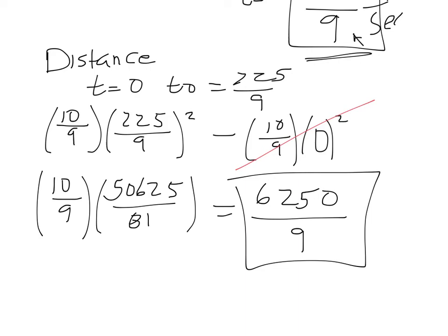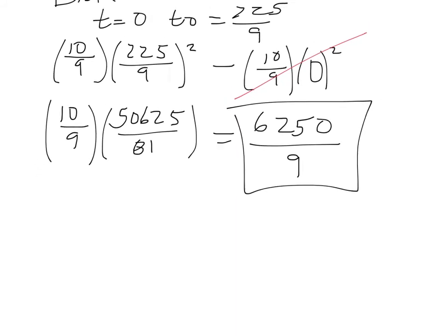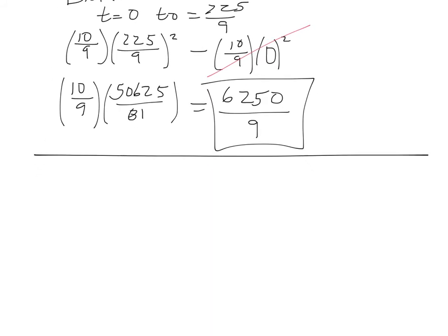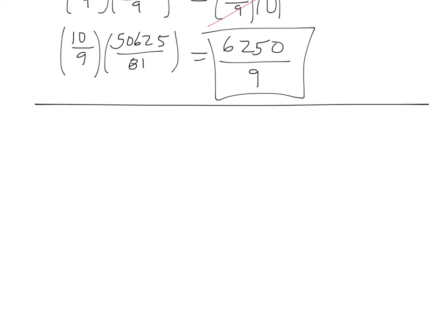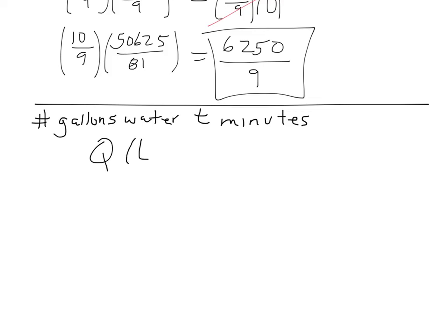That was worth doing as an example — both because it's a good example and to know how MyMathLab wants your answer. One more example and then we're done. The number of gallons of water in a tank T minutes after the tank starts to drain is Q(T) = 200(30 − T)². We'll find how fast the water is running out at the end of 10 minutes and then find the average flow rate.